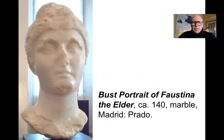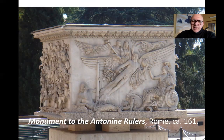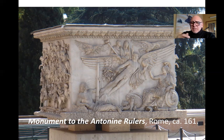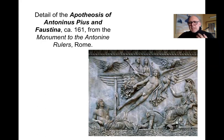Here are some portraits of Faustina the Elder — this one from around the year 140 is in Madrid. There is also a major monument in some ways dedicated to her, built by the adopted sons of Antoninus Pius and Faustina around 161. It's probably the base of some kind of monument — a statue or column — found today in Rome. What it shows us is a heroic winged figure, a Nike figure, bearing the emperor and his wife aloft to the heavens, accompanied by two eagles and other gods framing the scene. Really, it is an image of the deification, or apotheosis — the elevation — of these two important Antonine rulers.